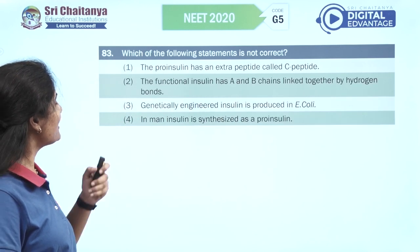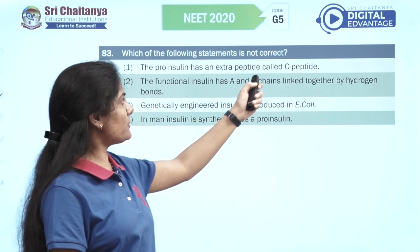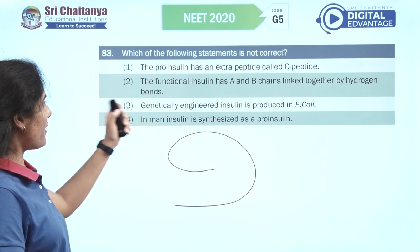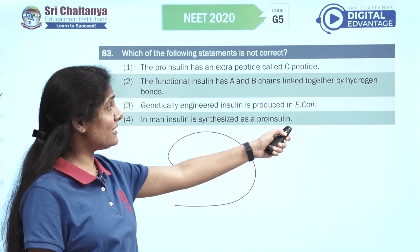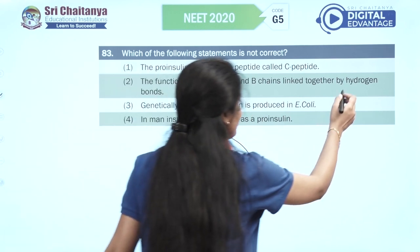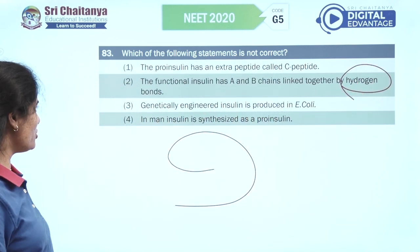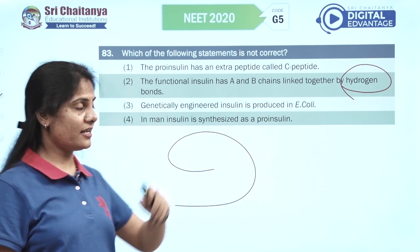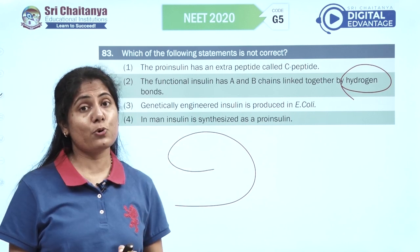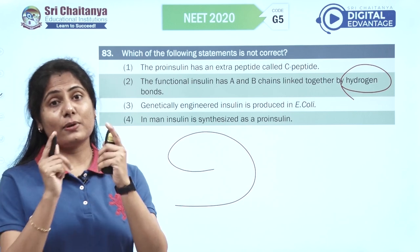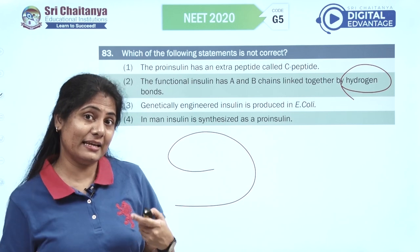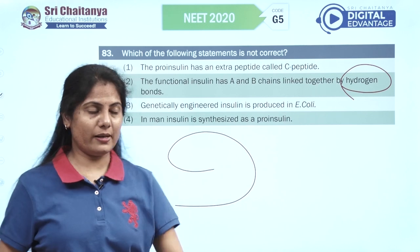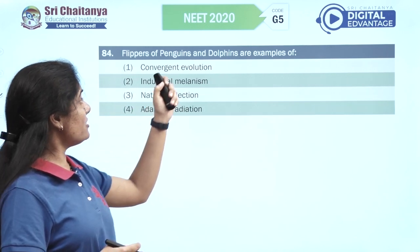Which statement is not correct? Proinsulin has an extra peptide called C — yes, it has A chain, B chain, and C peptide. Functional insulin has A and B chains linked by disulfide bridges, not hydrogen bonds — there we have the wrong statement. Genetically engineered insulin is produced in E. coli. In man, insulin is first synthesized as proinsulin and then processed into insulin. So the second option is wrong.